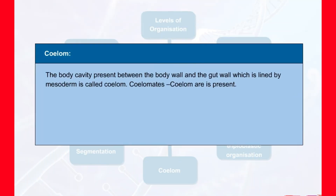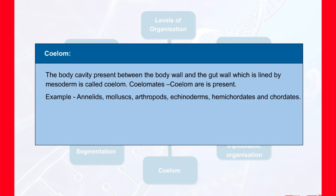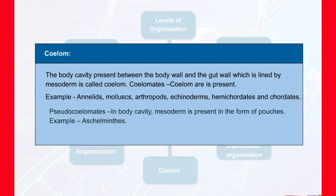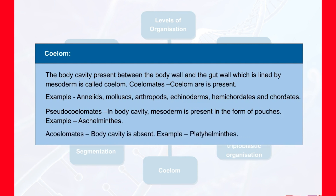Coelum: the body cavity present between the body wall and the gut wall, which is lined by mesoderm, is called coelum. Animals in which coelum is present are called coelomates — examples include annelids, mollusks, arthropods, echinoderms, hemichordates, and chordates. In some animals mesoderm is present in the form of pouches, hence known as pseudocoelum, and animals possessing them are called pseudocoelomates — example, Aschelminthes. Animals in which the body cavity is absent are called acoelomates — example, Platyhelminthes.